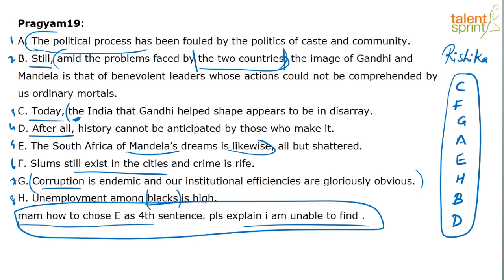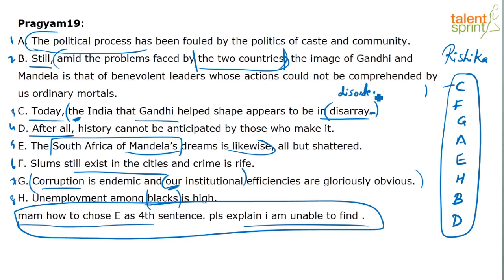'Today, the India that Gandhi helped shape appears to be in disarray.' One of the things I always keep saying — see, 'corruption is endemic and our institutional...' — who is 'our' referring to? We have Mandela here and we have Gandhi, so which institution is it talking about? I can't make it my topic sentence. So I'm going with C as the topic sentence. One of the ways to quickly form links is to ask questions. Why disarray? Disarray means disorder or confusion.